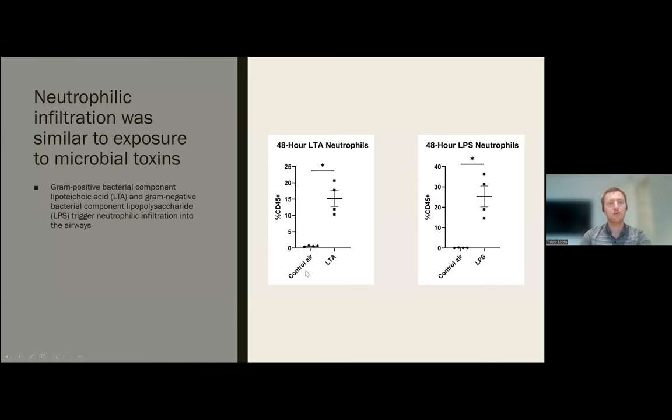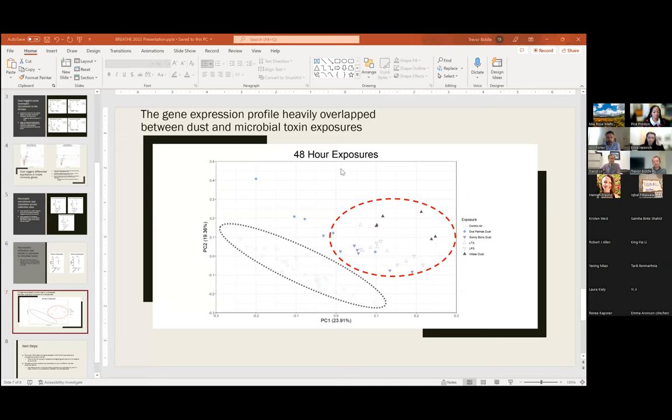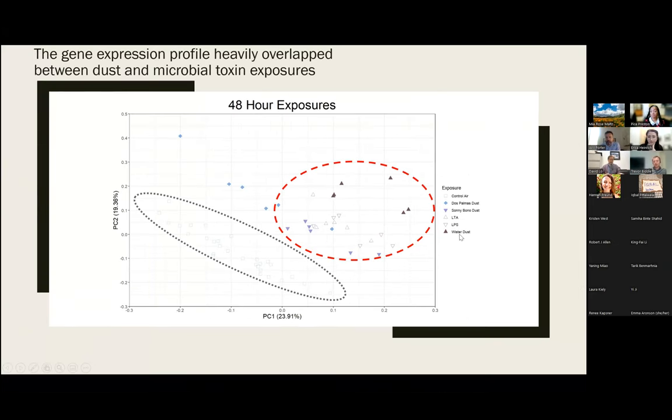So this is basically a PCA of all of the different exposures that we've done, the microbial toxins and the dust exposures. So the closer the two points are on this, the more similar their overall gene expression profile is. So there's a clear demarcation between the controls and the exposed. However, the exposed all kind of group together without any clear separation, which is a strong hint that we may be looking at similar mechanisms for the inflammation that happens in the dust exposure and the inflammation that happens with microbial toxins.